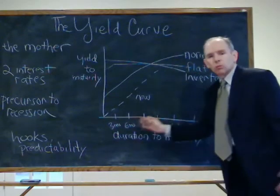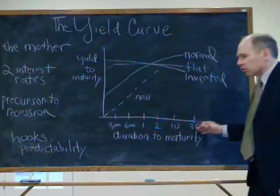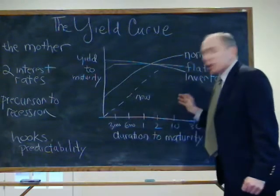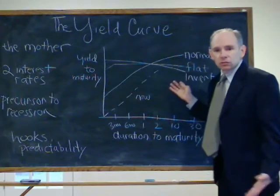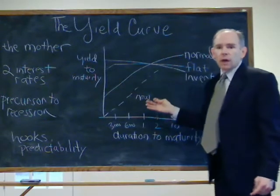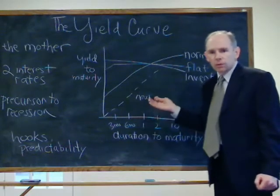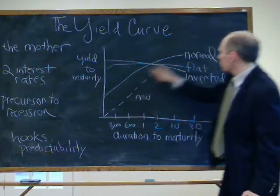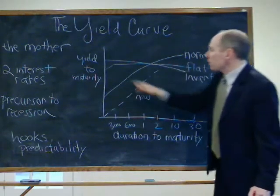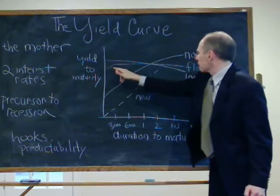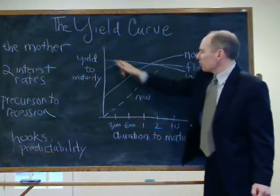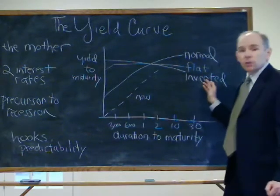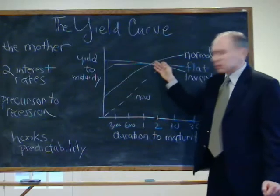The yield curve plots the yield to maturity of government bonds like U.S. Treasuries — 3 months, 6 months, 1 year, 2 year, 5 year, 10 year, 30 year. Normally, a long-term bond should have a higher yield than a short-term bond — otherwise you could just roll over short-term bonds repeatedly. There should be some premium for holding something for a longer period. So usually a yield curve is upward sloping. Sometimes it can become flat, or even inverted — where short-term debt has higher yields than long-term debt. Flat and inverted are sometimes used interchangeably, but in general that shape is not the normal shape.